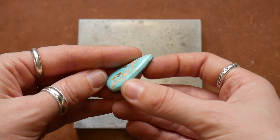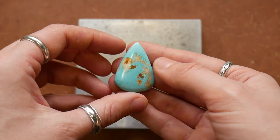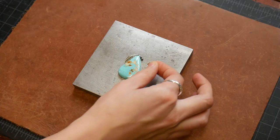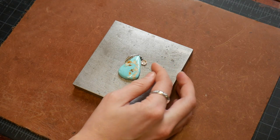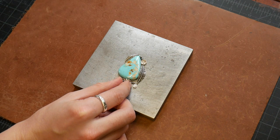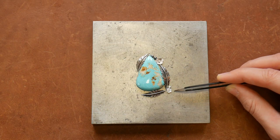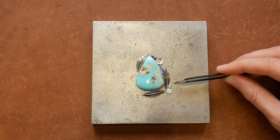I'm going to be working with this gorgeous Royston turquoise stone for this statement turquoise necklace. If you haven't already, feel free to check out my previous two videos to see how I made the sterling silver leaves and sterling silver flowers that I'm going to be using to adorn this turquoise stone.